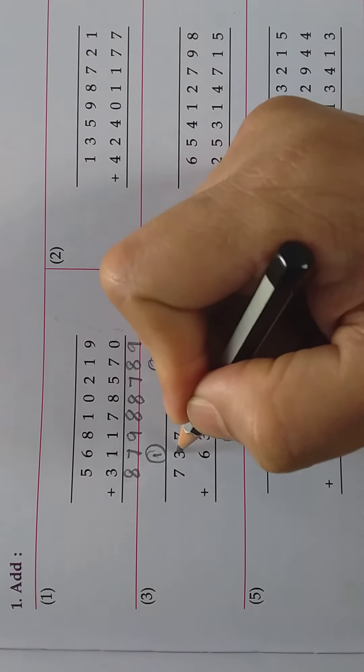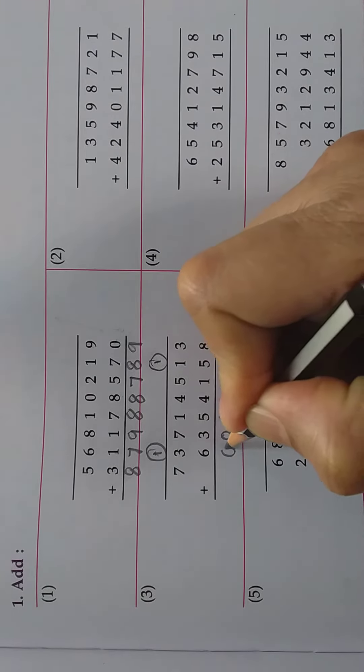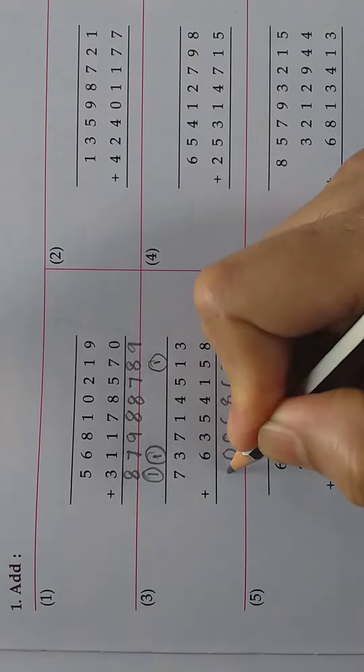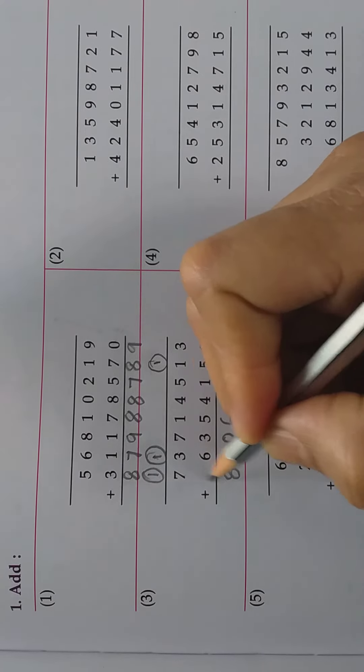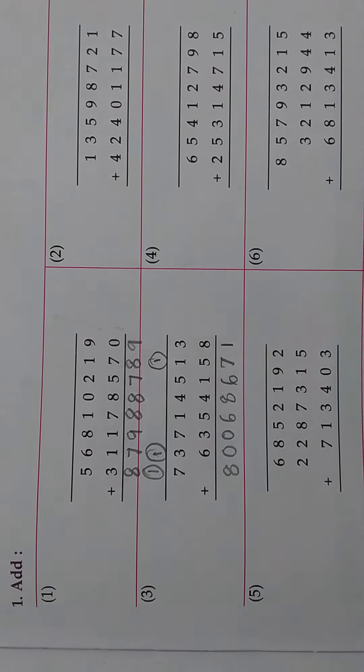6 plus 3 is how much? 9. 9 plus 1, 10. Now again carry will come. 7 plus 1 is 8. Here nothing is there now, 7 plus 1 carry. In this way you should add. Understood?